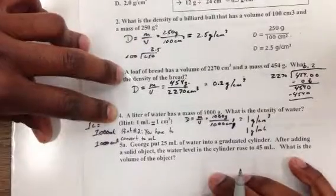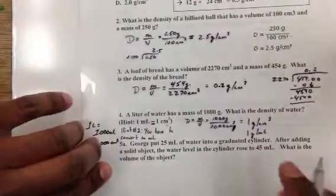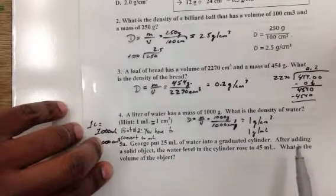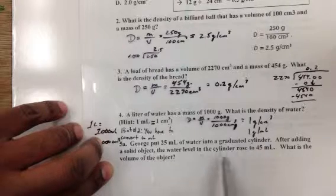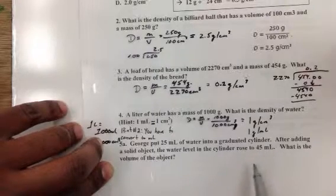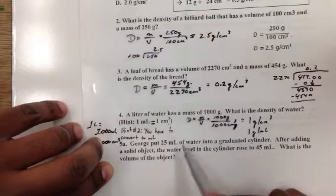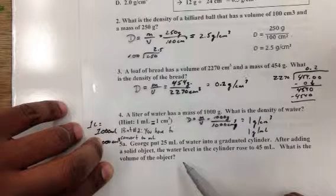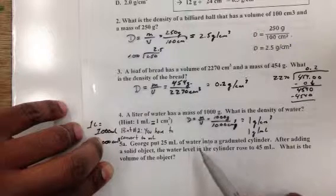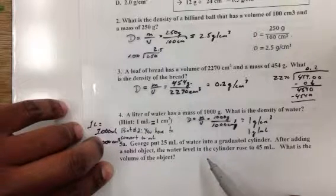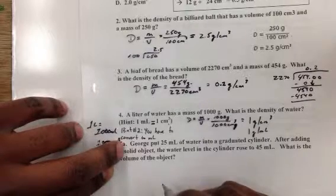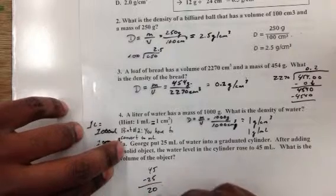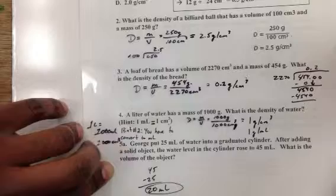This one, just real quick, I'm not going to walk through this whole problem right here. But as this one says, what is the volume? George put 25 milliliters of water into a graduated cylinder. After measuring a solid object, the water level rose to 45 milliliters. What is the volume of the object? This is the displacement method. The object that George put into the graduated cylinder made the water level rise 20 milliliters, so it displaced 20 milliliters of water. The volume of the object must be the difference between 45 and 25, which is going to be simply 20. So the volume of that object is going to be 20 milliliters.